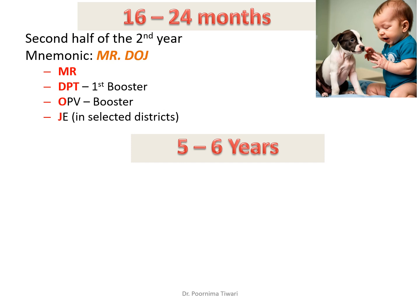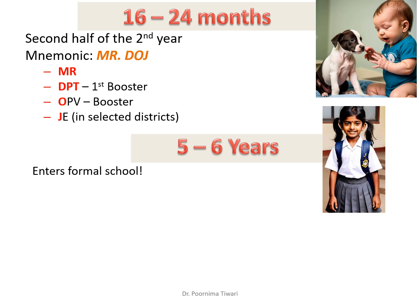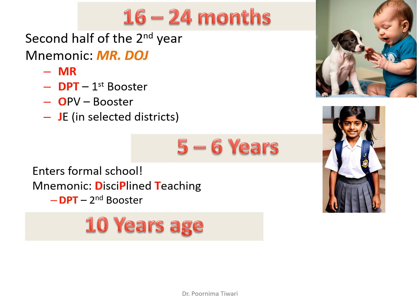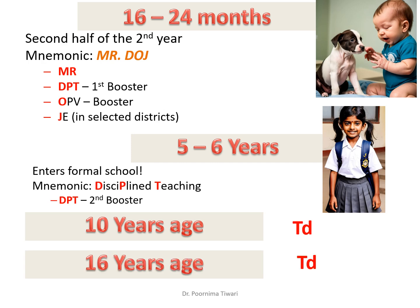At five to six years, when the child enters formal schooling and undergoes disciplined teaching, the mnemonic is DPT — the second booster of DPT is given at five to six years. At 10 years of age and 16 years of age, a single dose of TD (Tetanus and Diphtheria combination) is given.